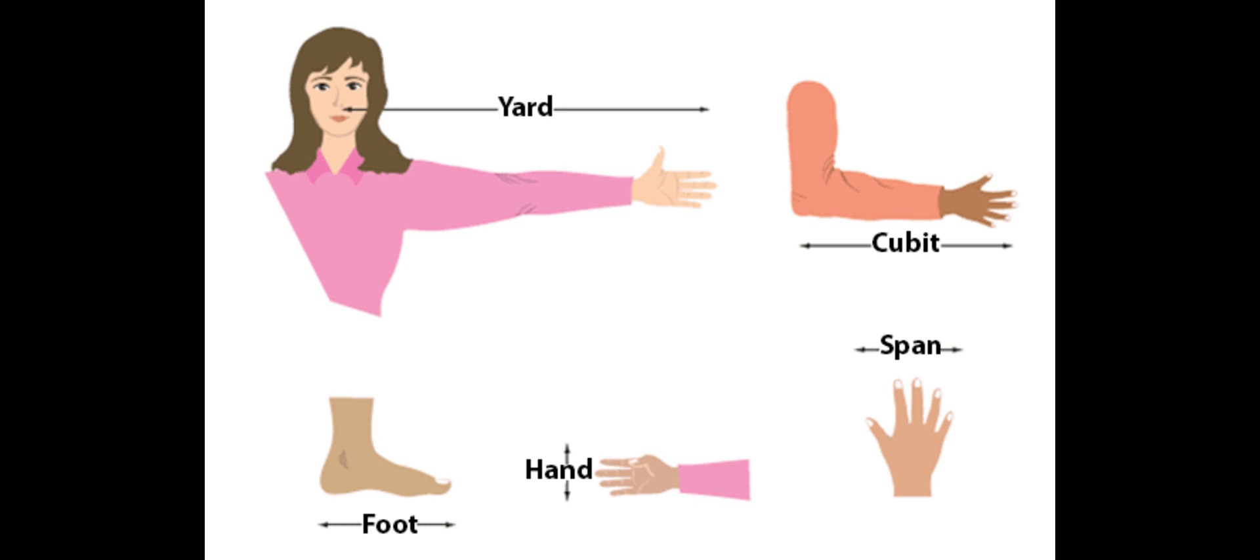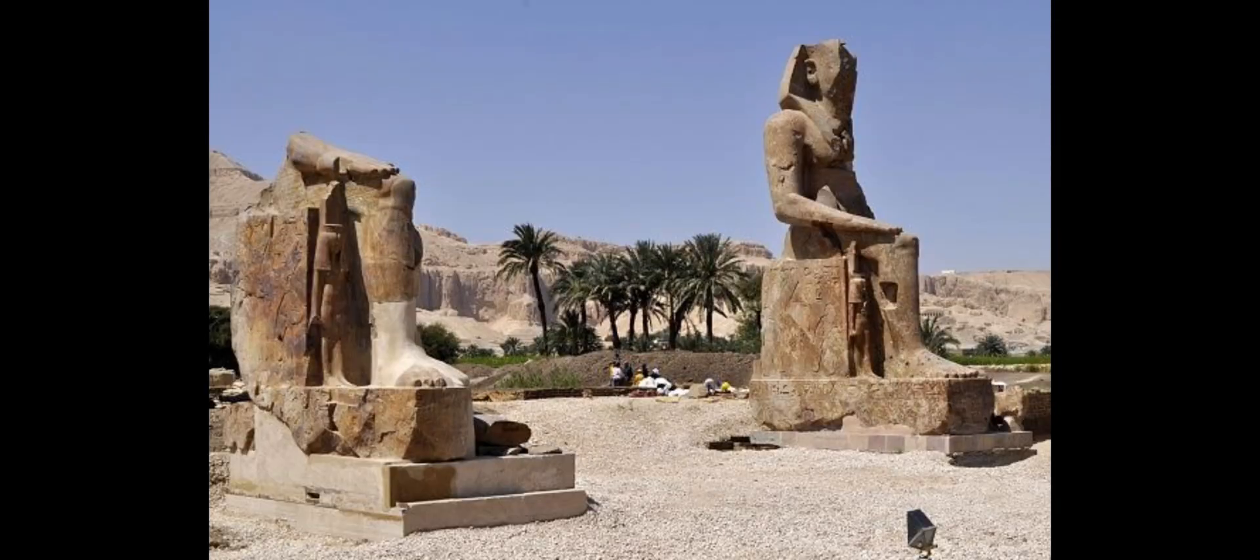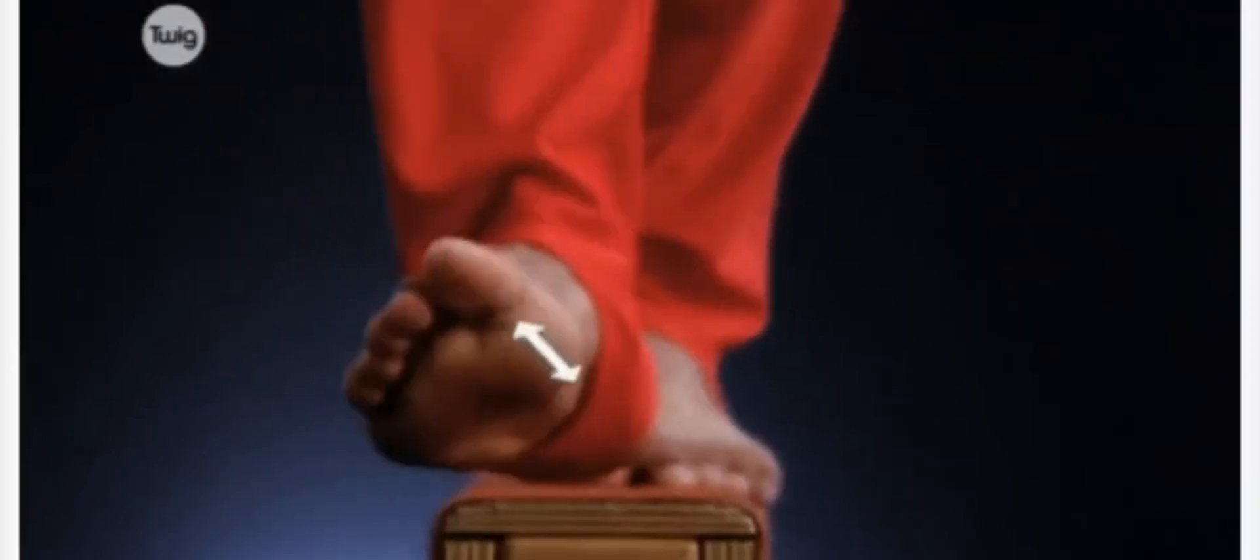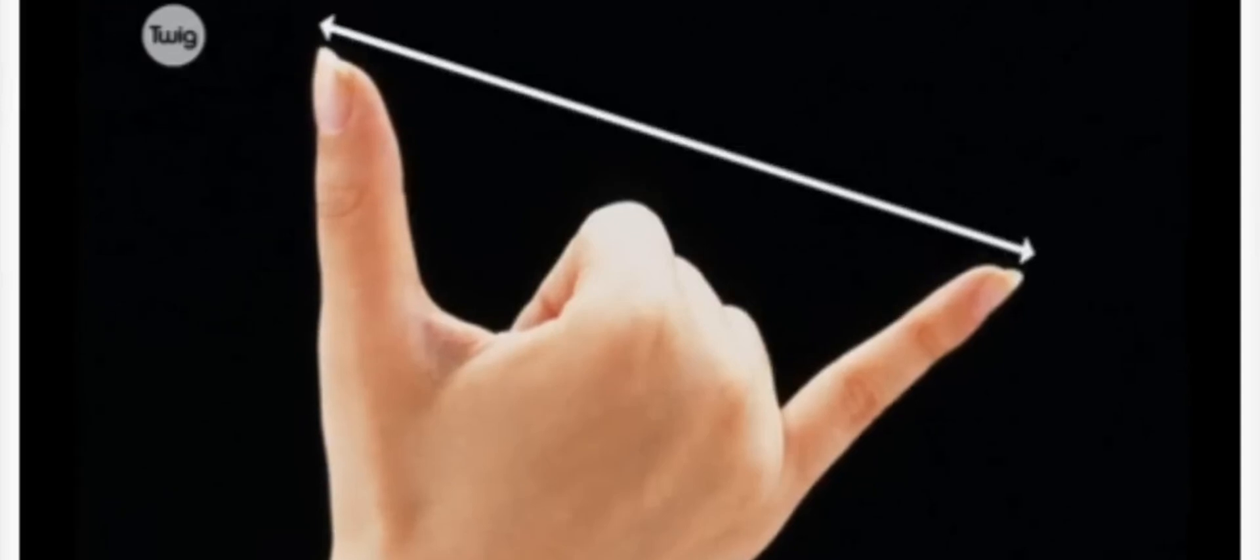The Egyptians used the reigning pharaoh's foot, which was the royal standard of the unit of measurement. This became a problem because whenever a new pharaoh came to power, the standard of measurement had to be recalibrated.